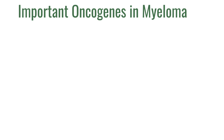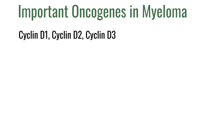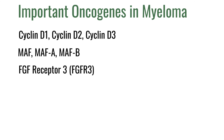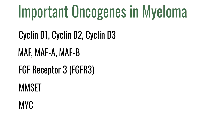There are quite a few other oncogenes important in multiple myeloma: cyclin D1, cyclin D2, and cyclin D3; MAF, MAFA, and MAFB; FGF receptor 3; and MMSET. Those are the genes located at the chromosome translocations we talked about earlier. And then of course MYC, and NRAS and KRAS — those are probably the most important oncogenes in multiple myeloma.